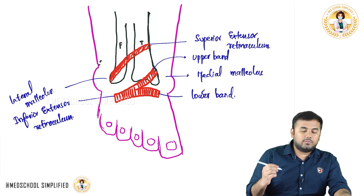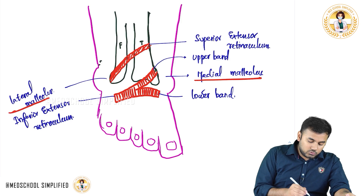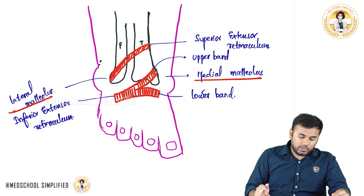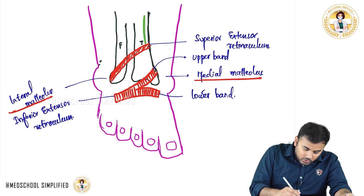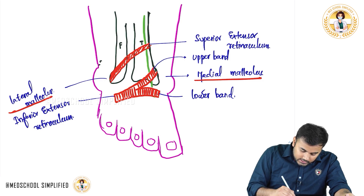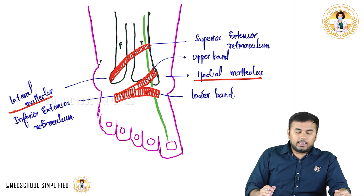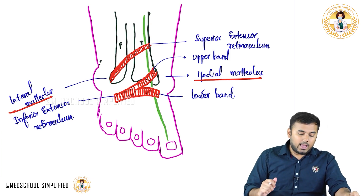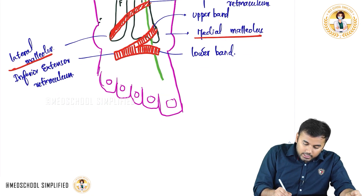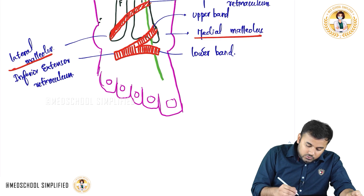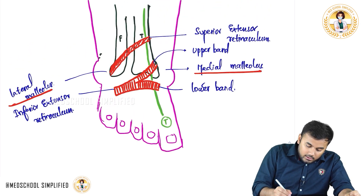We shall see from the medial malleolus till the lateral malleolus what structures are located one by one. First important structure: you see there is a green color line coming all the way down going to the toe. This is called tibialis anterior. Let me write it as T and later on I'll tell you the names. So T stands for tibialis anterior muscle.